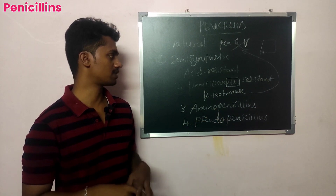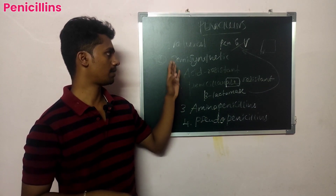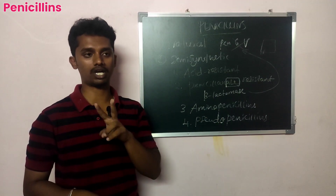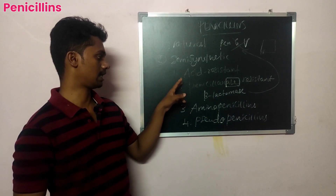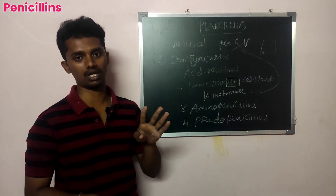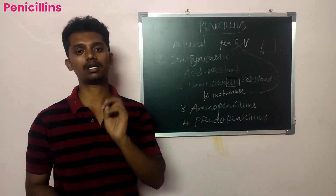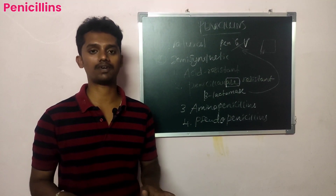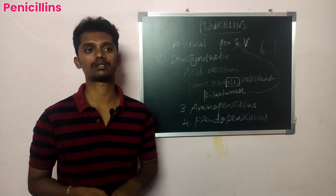So in total, there are two major types: natural drugs and semi-synthetic derivatives. Under semi-synthetic derivatives there are four sub-types, and under pseudo penicillins there are further subdivisions. These are all the classifications of penicillins.